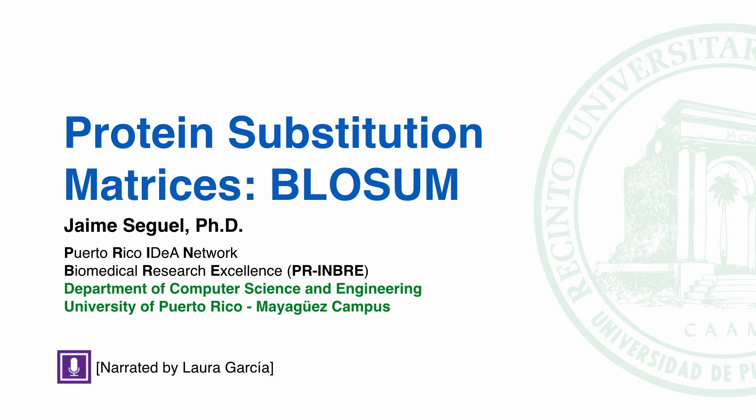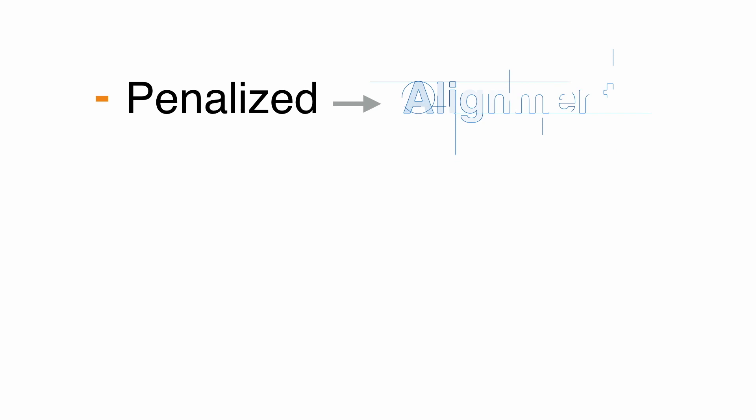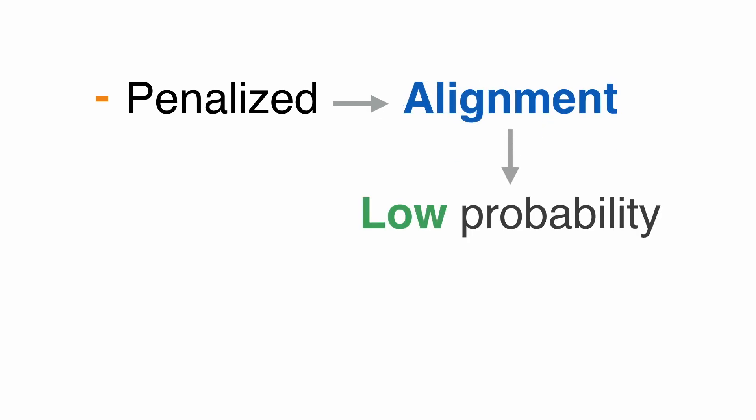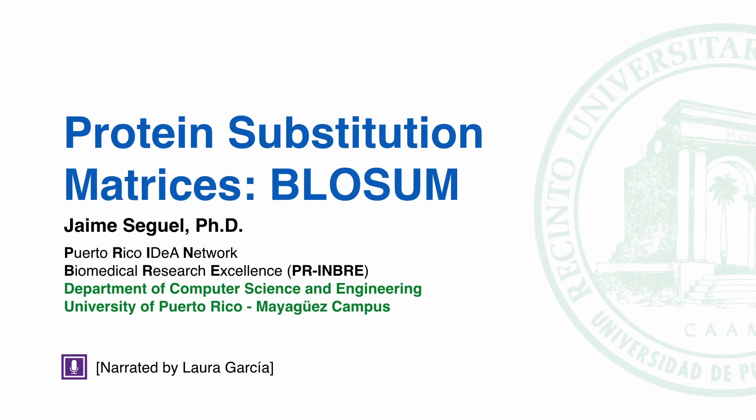Substitution matrices for amino acids provide a likelihood for a character substitution. The aim is to penalize the alignment of residues together if they have a low probability of being homologous and reward those changes that are highly probable. The most commonly used substitution matrices are the block substitutions, BLOSUM, and the point accepted mutation, PAM.